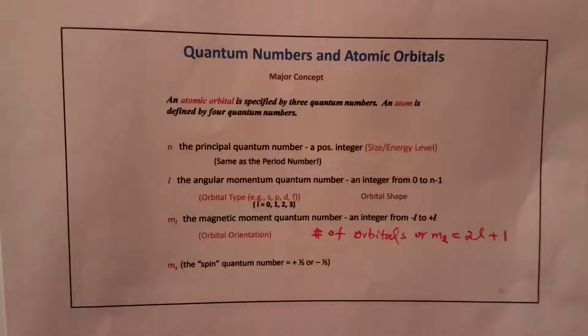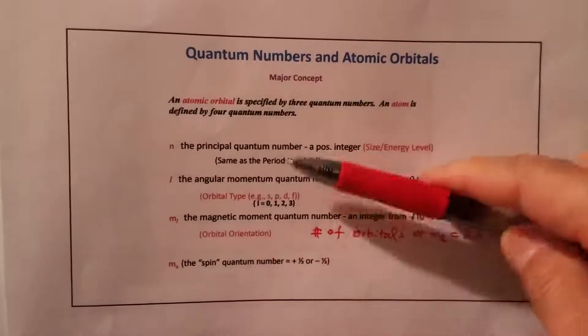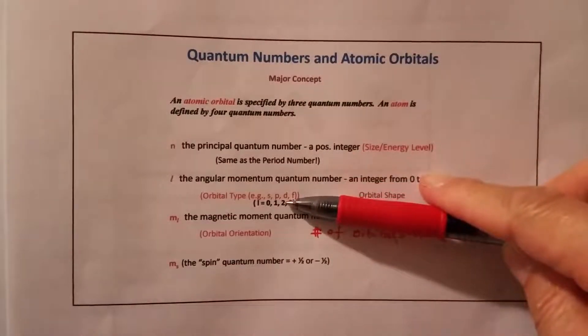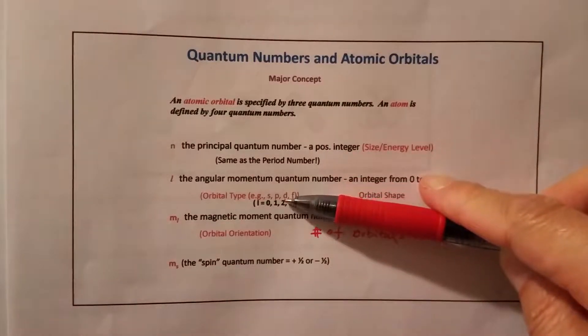So l equals 2, when l equals 2, then the subshell should be d. Okay, so d subshell.